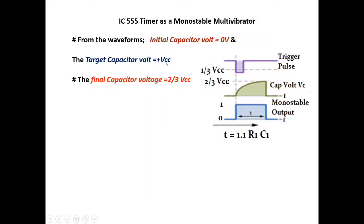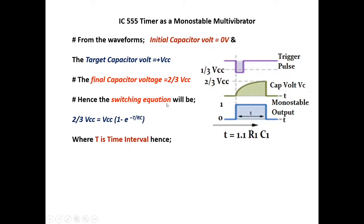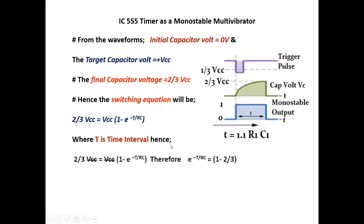The target capacitor voltage is plus VCC, but the final capacitor voltage up to which the charging can take place is 2/3 VCC. Hence the switching equation will be — this is a standard equation — written as: final capacitor voltage equals target capacitor voltage into bracket (1 minus e raised to power minus T upon RC), where T is the time interval. So 2/3 VCC equals VCC into (1 minus e raised to power minus T upon RC), where VCC on both sides will cancel out.